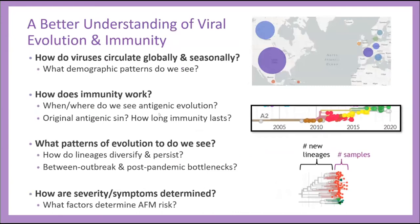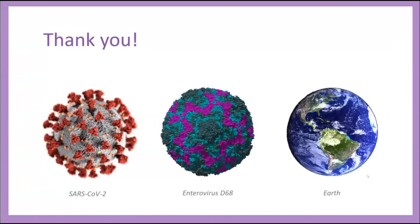With that, I just want to close by saying these are the main questions I hope to answer, especially in the next couple of years if I have a grant to continue my work on D68. I really hope to dig into this — helping to better show how the virus circulates globally and seasonally, have a better understanding of how immunity works, if we see signs of antigenic sin or immunity waning, how often infection happens, where viruses diversify and persist between outbreaks, and how all of this ties together to determine how symptoms and severity are determined — especially where we see AFM happening and how much is the genetics of the virus versus immune history versus other factors. I'd like to thank my collaborators and thank all of you for listening.